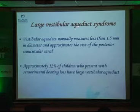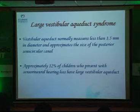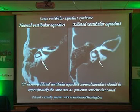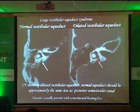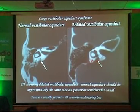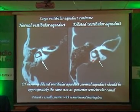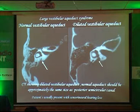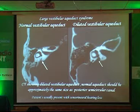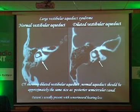Whenever we look at the large vestibular aqueduct, it should measure less than 1.5 mm. Rather than measuring directly, look at the posterior semicircular canal and compare it to the vestibular aqueduct — both should be more or less the same diameter. But if the vestibular aqueduct is much larger than the posterior semicircular canal, you know you're dealing with a dilated vestibular aqueduct of more than 1.5 mm.